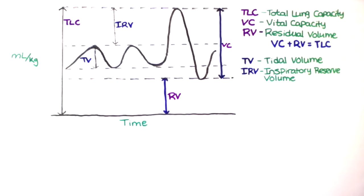So as you're sitting there and you make a normal tidal inspiration and then take a deep breath all the way in as far as you can, that's your inspiratory reserve volume. Normally it's 60% of the total lung capacity.